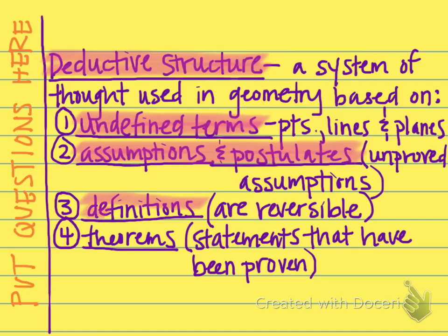Definitions. You know a lot of definitions. These are also reversible. For example, if I say a triangle is a three-sided polygon, I can reverse that sentence. I can reverse the subject and object of the sentence to, a three-sided polygon is a triangle.